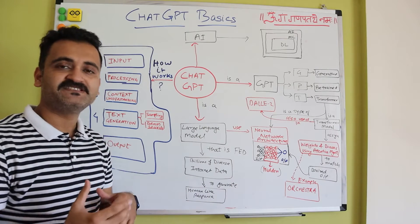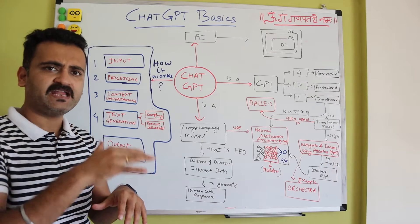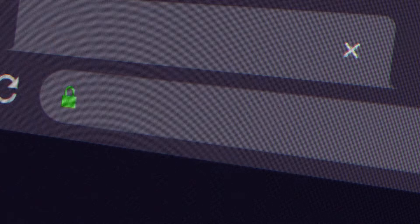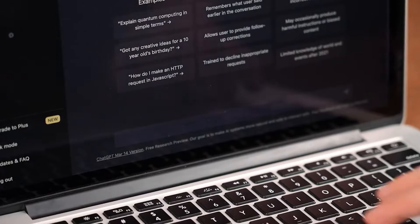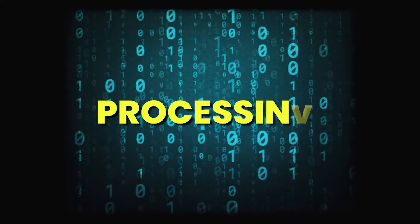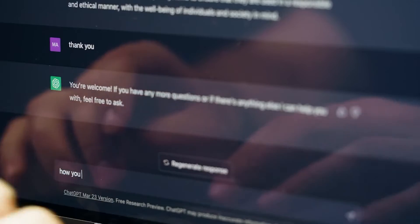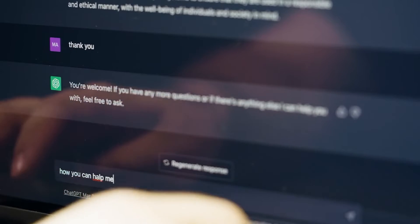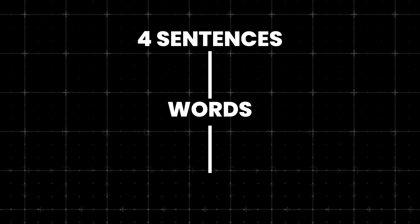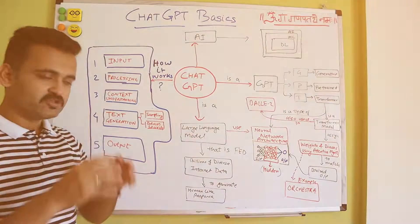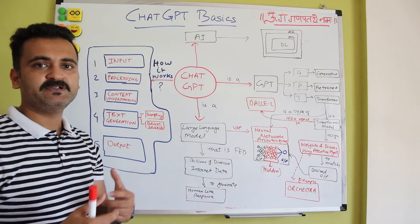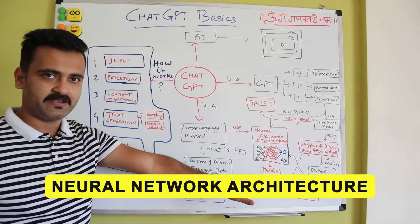Now let's understand how ChatGPT works when you interact with it. I've distilled it into five high-level steps. Step one is input — the moment you write a question it goes as input to the ChatGPT model. Step two is processing — if you write one or multiple sentences, the processing step divides the whole thing into words and further into small units or chunks, then assigns tokens to them. This process is called tokenization, and it helps ChatGPT understand your query better using the neural network architecture.